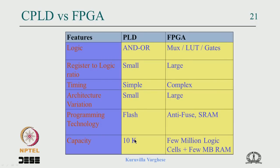The features of CPLDs are: very wide AND-OR logic, small number of registers, simple timing, small architecture variation, small programming technology, and capacity around 10K. The register-to-logic ratio is very small — there are many AND gates but few registers relative to the logic. This makes it difficult to implement memory structures, FIFOs, and RAMs in a CPLD, unlike in an FPGA.